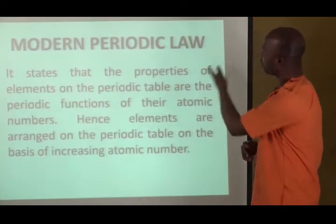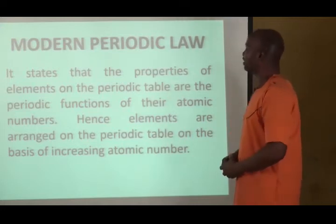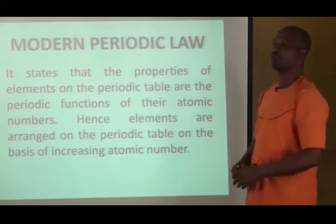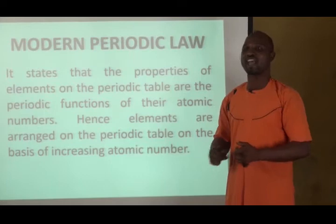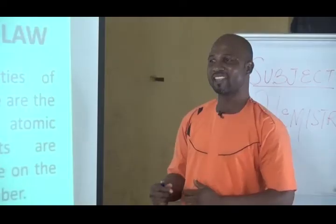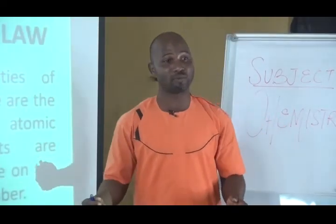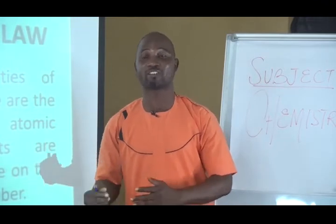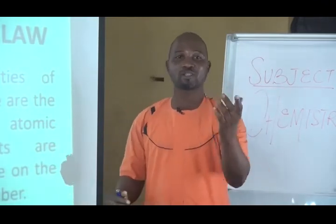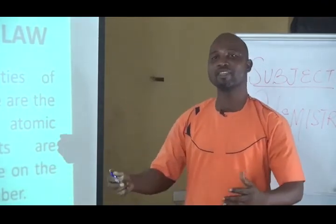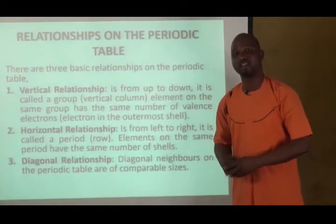That brought us to the modern periodic law, which states that the properties of elements arranged on the periodic table is a periodic function of their atomic numbers. Hence, elements are arranged on the periodic table in order of their increasing atomic number, from hydrogen with atomic number 1. At SS3 level, you will stop at the 30th element, which is zinc, with atomic number 30.